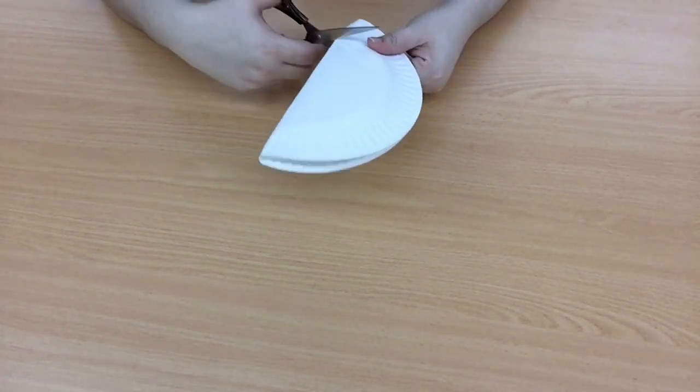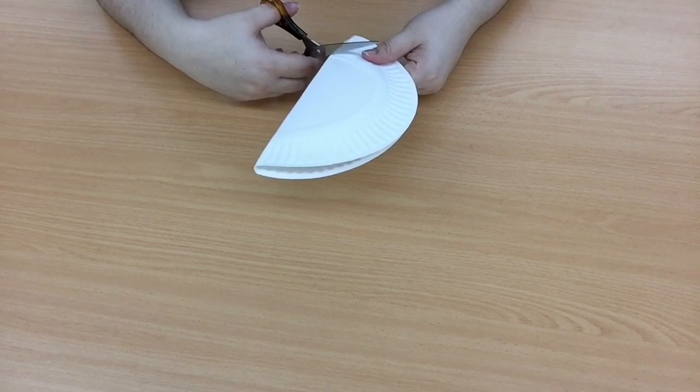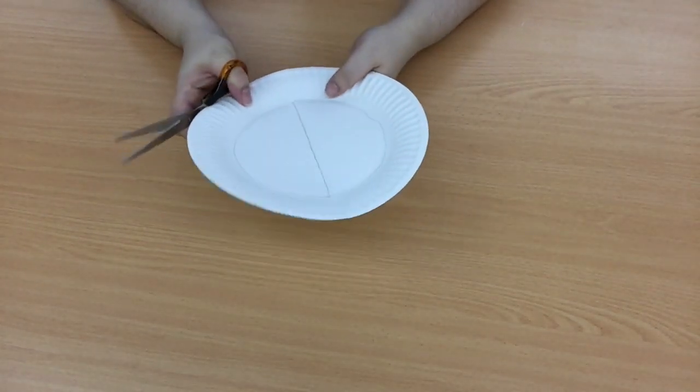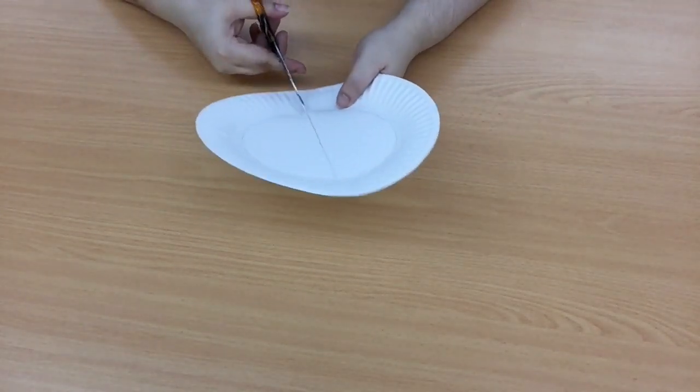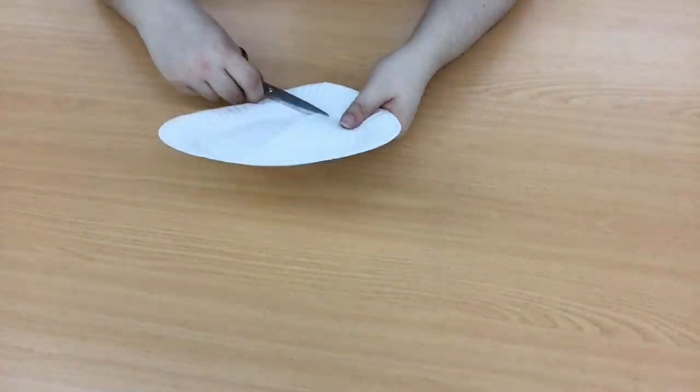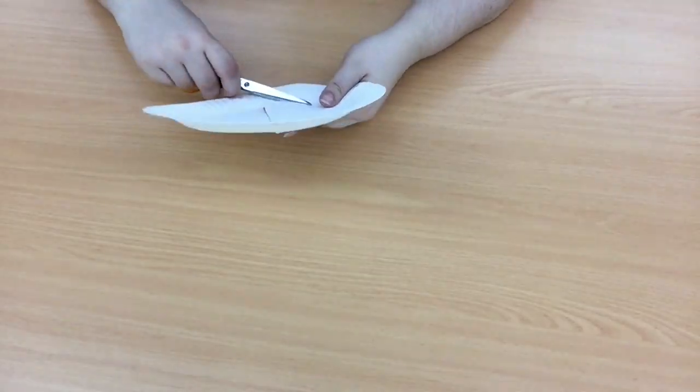Then open it up and use the crease line to draw an outline where we're going to cut. Folding it in half again, use your scissors to just cut your beginning line to make it a bit easier to cut the straight line in the middle. Then proceed to cut along everywhere that you've lined with your pencil.